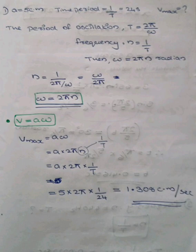Substituting these equations: 2πT equals time period, frequency n equals 1 by T, and time period T equals 2π by ω. From these, we derive omega ω equals 2πn radians.